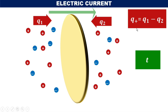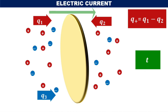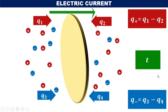The total positive charges which cross the given area in T seconds is represented as Q+. Similarly, now considering negative charges: Q3 amount of negative charges cross the given area in the reference direction, and Q4 amount of negative charges cross in the opposite direction, in T seconds. The net flow of negative charges is represented as Q3 minus Q4, which is represented as Q−.